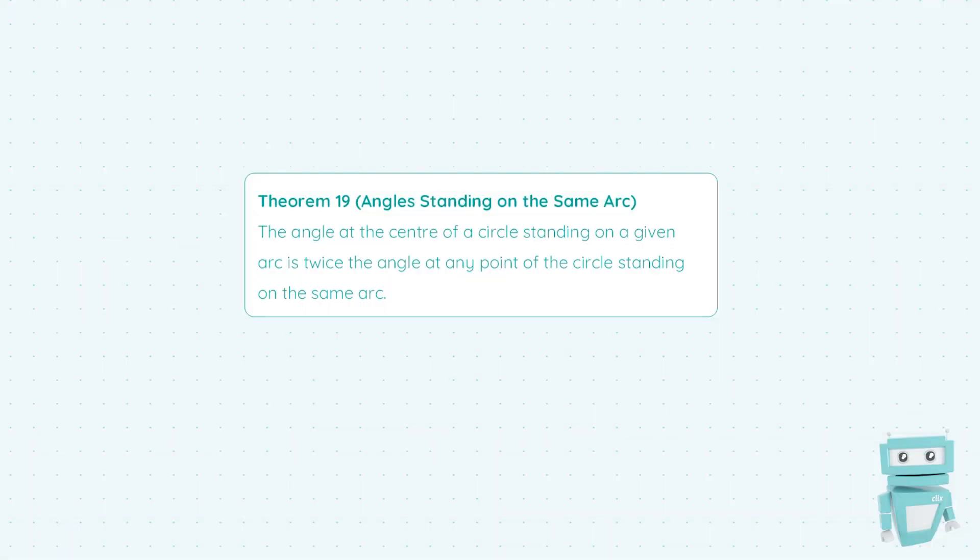Hi guys, Sean here from StudyClicks. In this video we're going to be taking a look at Theorem 19, which states that the angle at the centre of a circle standing on a given arc is twice the angle at any point of the circle standing on the same arc.